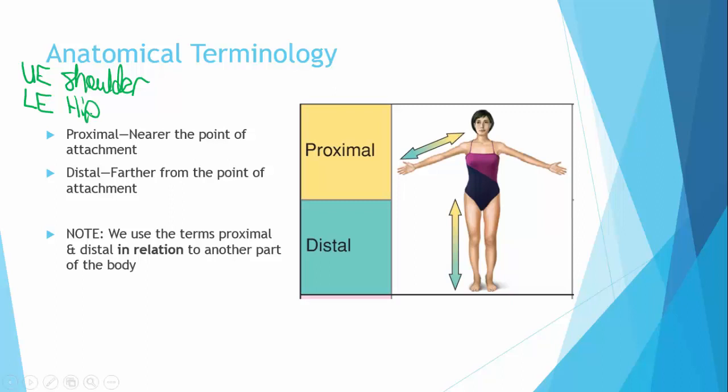So for example, to use both of these terms with the same body part, the elbow is distal to the shoulder, the elbow is also proximal to the hand. The elbow is going to be closer to the shoulder in comparison to the hand, which is why we say that the elbow is proximal to the hand, but the elbow is going to be further away from the point of attachment versus the shoulder, which is why it's also distal. We can do the same thing for the lower extremity as well. The ankle is distal to the knee. The ankle is proximal to the toes.